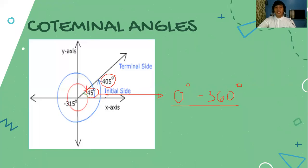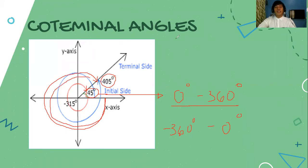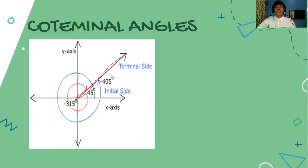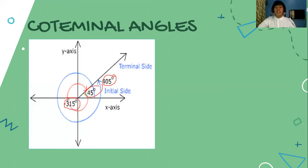The angle of 405 degrees will also have another coterminal angle — the negative coterminal angle. To determine it, by rotating and sharing a common terminal side, this angle is a negative angle between negative 360 degrees to 0 degrees. Every angle that exceeds 360 degrees or negative 360 degrees could have two possible coterminal angles: a positive coterminal angle between 0 and 360 degrees, and a negative coterminal angle between negative 360 degrees to 0 degrees.